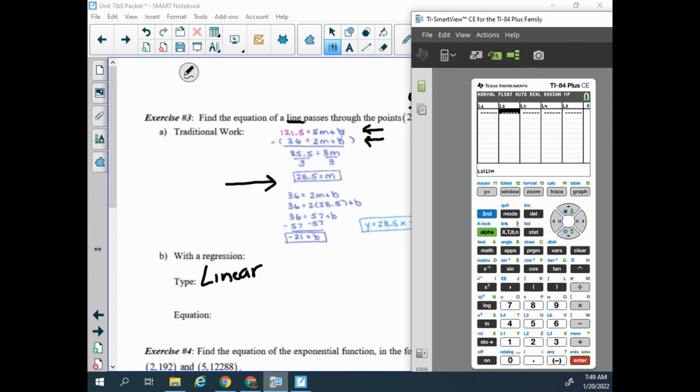So over here, I go to stat and edit. And since my lists are cleared, I can just enter the information in. I'm going to enter my x's first. So 2 and 5 for the x's. And over, I have 36 goes with 2, and 121.5 goes with the 5.